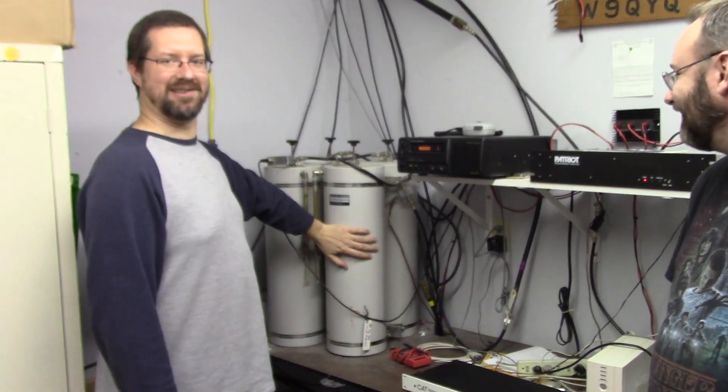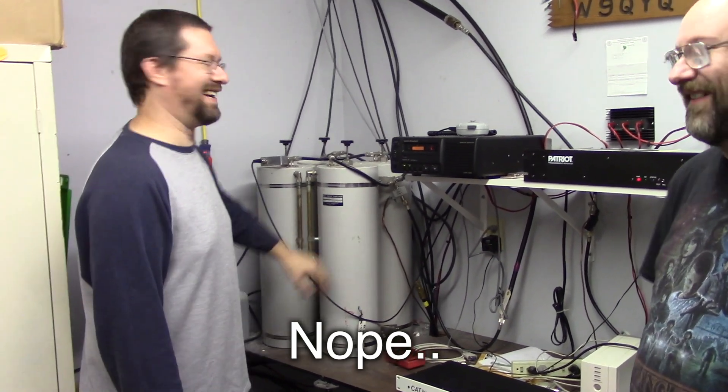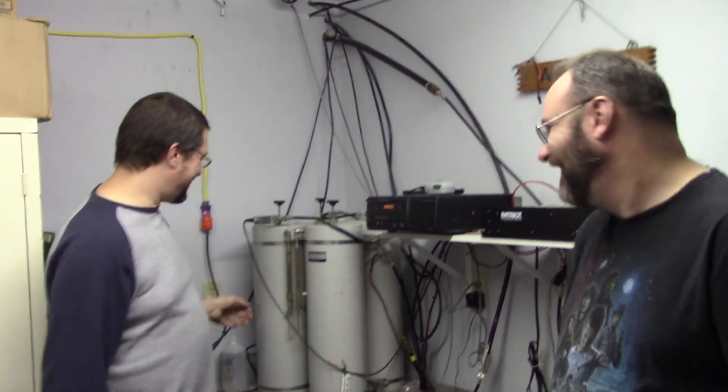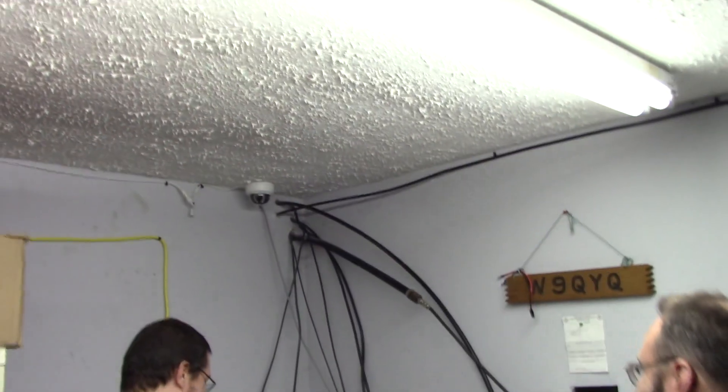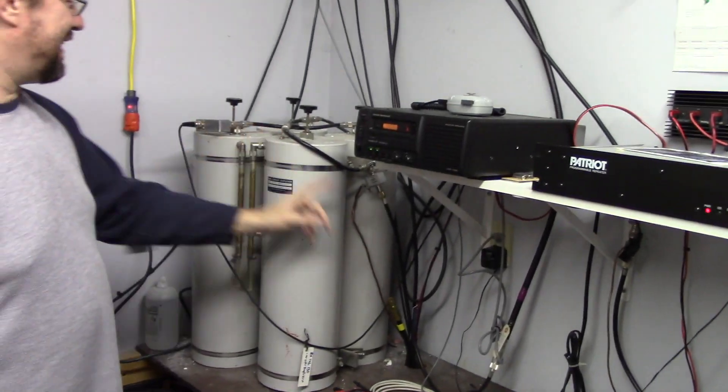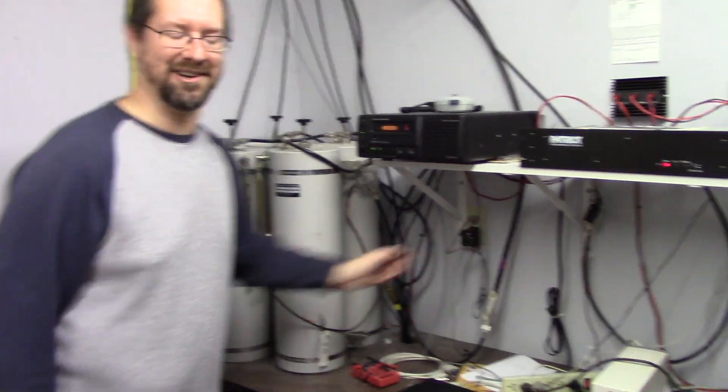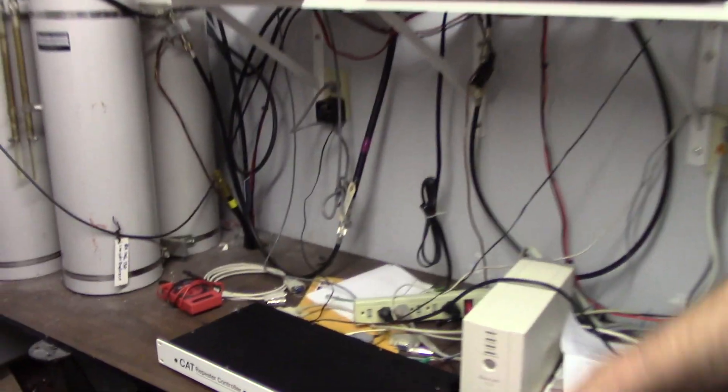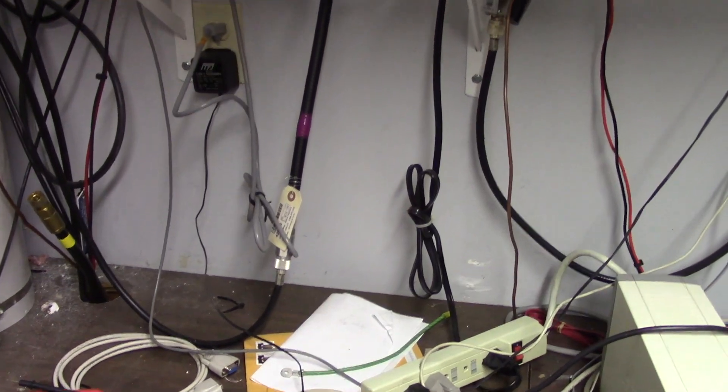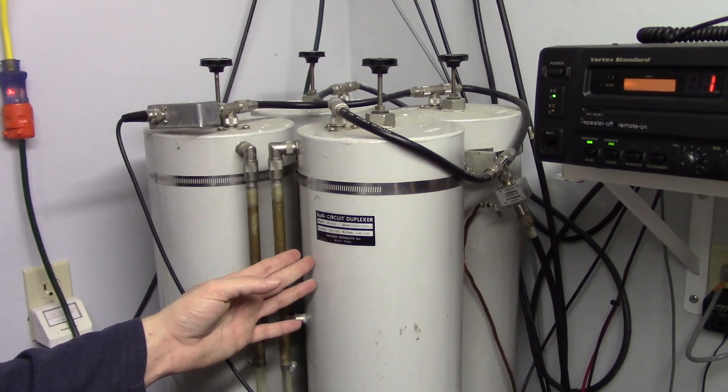That's where a duplexer cavity comes in. I probably shouldn't have hit that. You have to be very careful with that. So twist the knob, that's bad. These are like a capacitor, right? So yeah, it's hooked here. This is the hard line right to the antenna. We'll get a shot of where this goes. So this is an old Wacom duplexer. They're not in business anymore, but they sold an awful lot of these over the years.